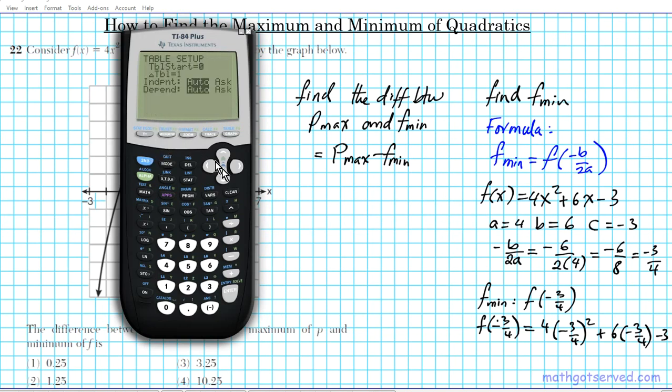This is the table setup right here on the top of window. If you go to the table setup and you ask the calculator to ask you for the independent variable, if you ask it to ask you, then you can specify what you want to find the output for. So we want to find the output for negative 3 divided by 4, enter, negative 5.25.